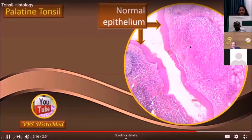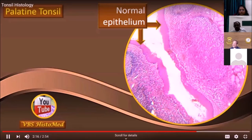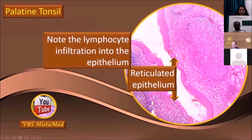Next, palatine tonsil. I would like to caution all my students that this is probably the one structure where the same epithelium is seen in two avatars. One is the normal epithelium, just like anywhere else in the mouth cavity — stratified squamous non-keratinized epithelium. This is also the structure where a very interesting variant, namely the reticulated epithelium, is also visible.